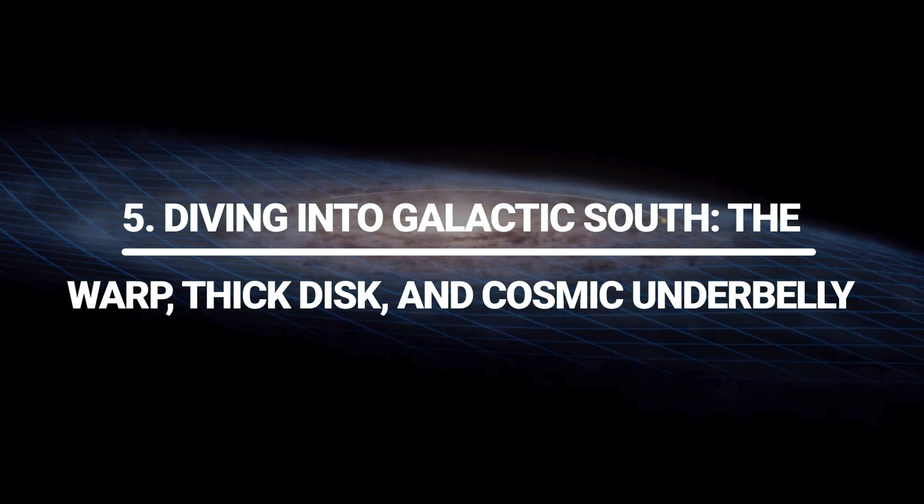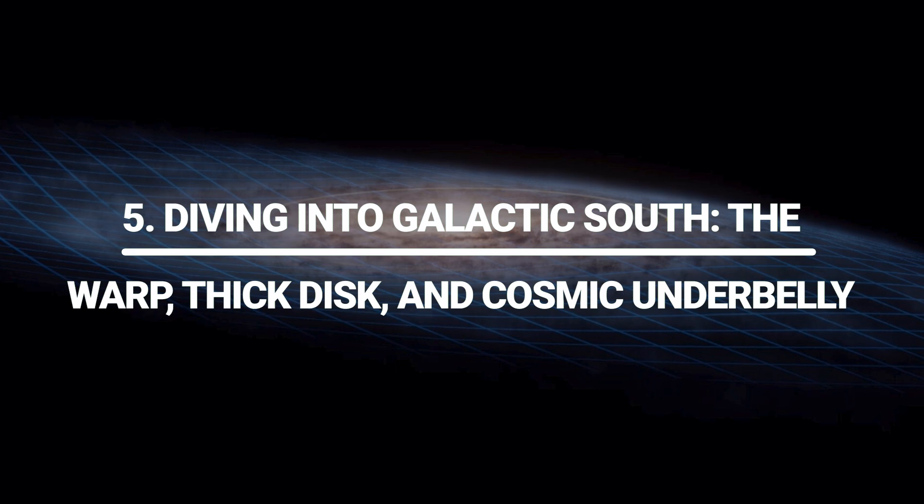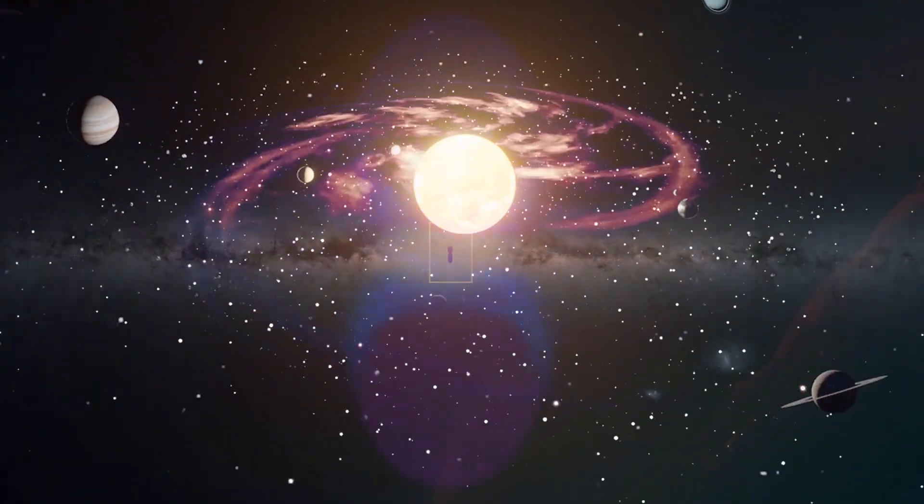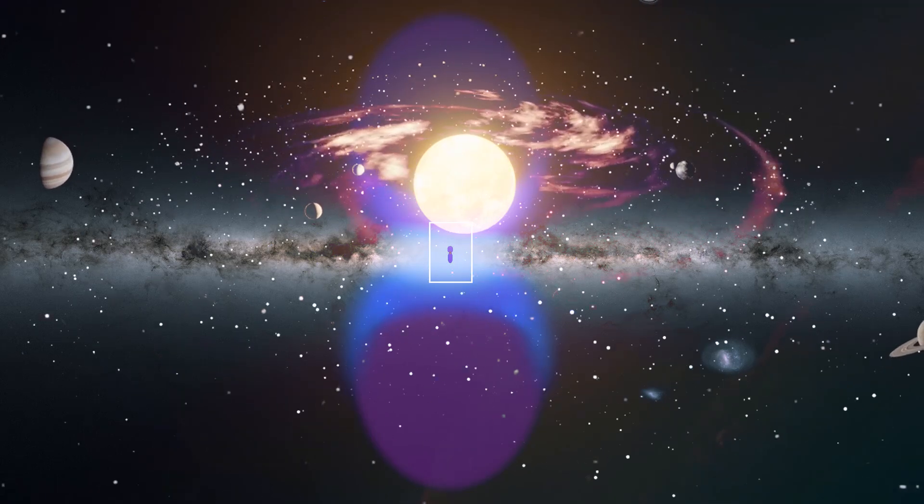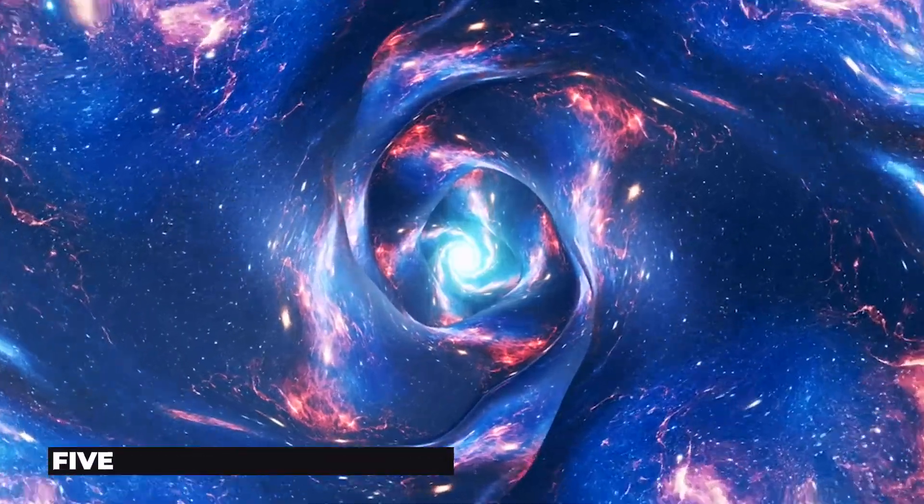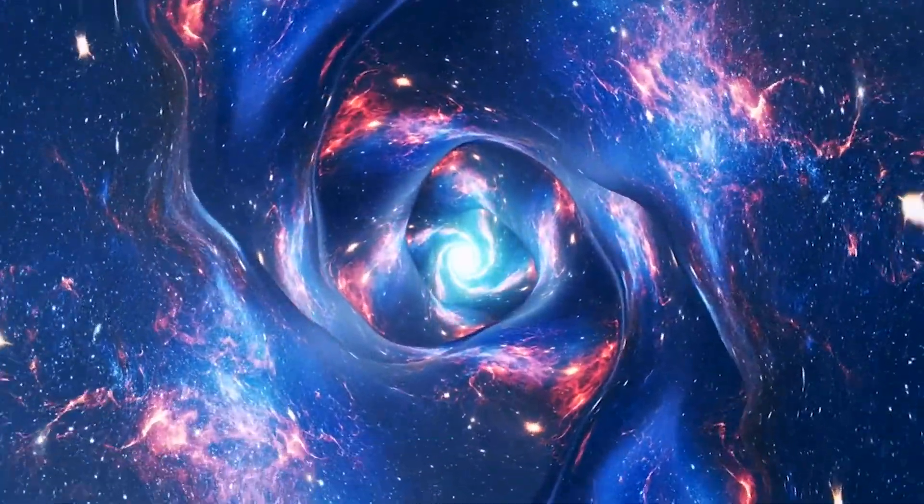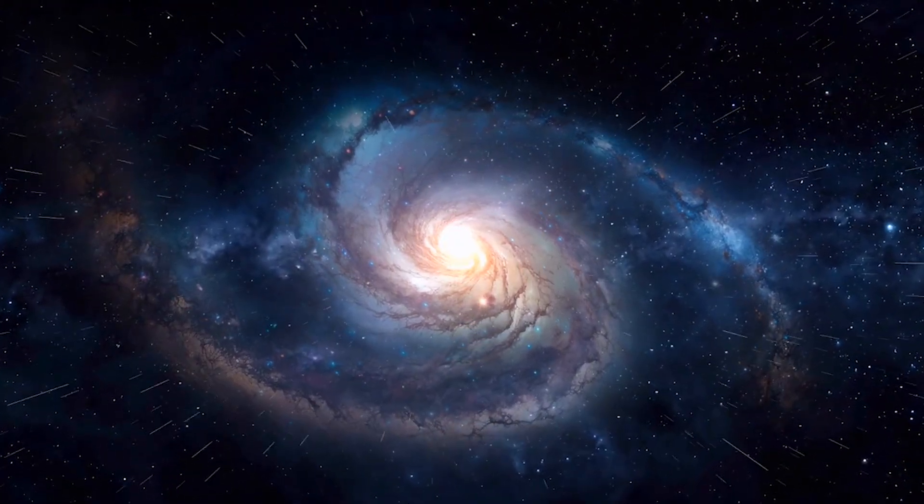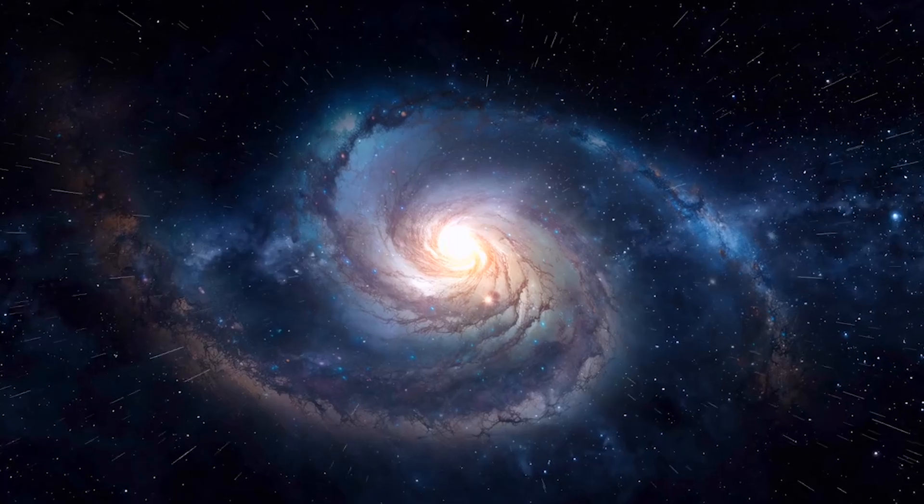Diving into galactic south. The warp, thick disk, and cosmic underbelly. Now pitch downward, past the ecliptic, through the sun's southern heliotail, and out the chimney throat. Within 500 light-years, the star density swells again. You're in the galaxy's midplane. But keep falling, and the disk itself begins to bend.